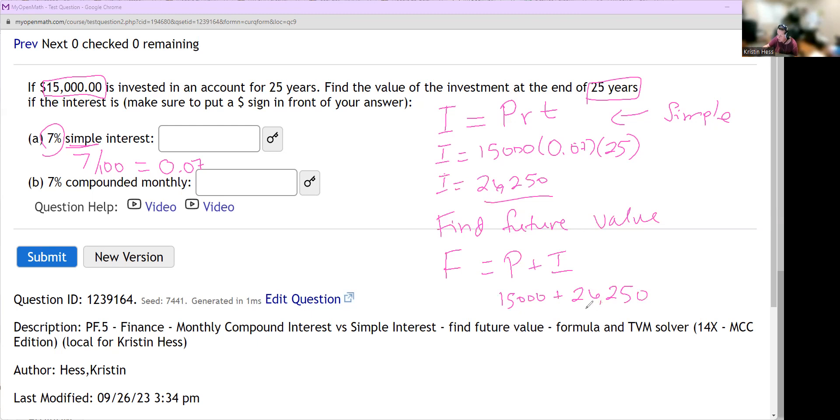Plug it into a calculator or do it in your head. 0 and 0 is 0, 5 and 2 is 7, 6 and 5 is 11, carry the 1. And then the future value is $41,250. So in here, you're going to type in 41,250.